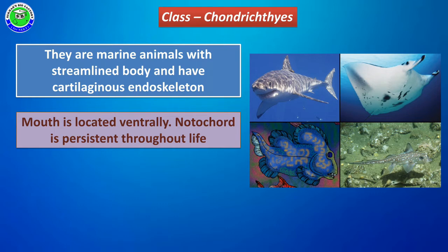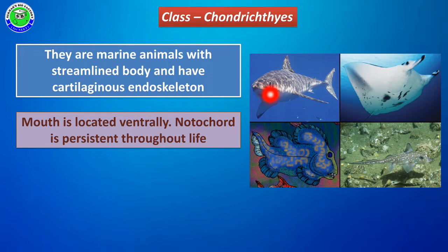All these members have a mouth, and the location of the mouth is very important. In Chondrichthyes members, the mouth is located towards the ventral side — below the tip, at the ventral side.